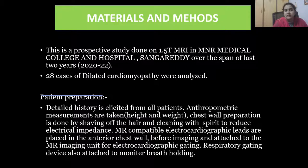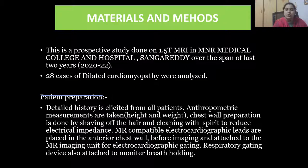Materials and methods: this is a prospective study done on a 1.5 Tesla MRI at MNR Medical College and Hospital, Sangareddy. Over the span of two years, 28 cases of dilated cardiomyopathy were analyzed. Detailed history was elicited from all patients. Anthropometric measurements including height and weight were taken. Chest wall preparation was done by shaving and cleaning with spirit to reduce electrical impedance. MR-compatible electrocardiographic leads were placed on the anterior chest wall and attached to the MRI unit for ECG gating. A respiratory gating device was also attached to monitor breath hold.